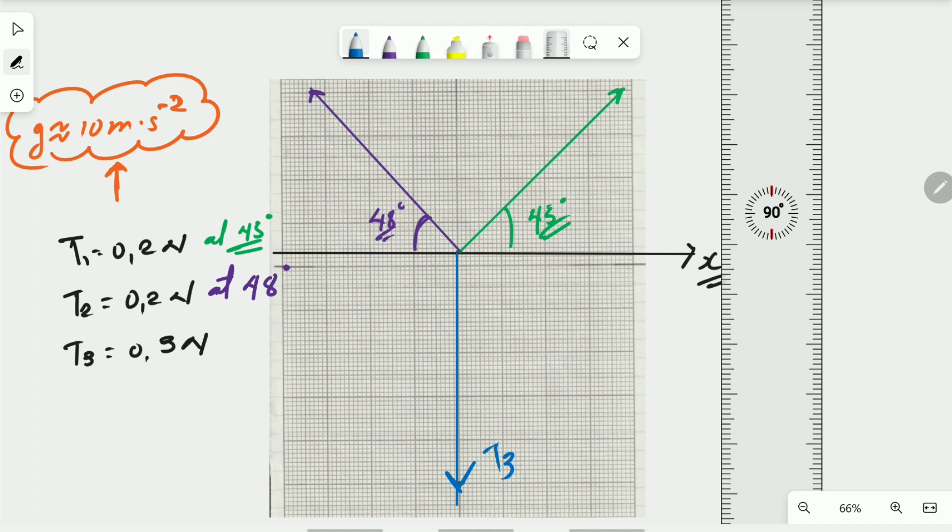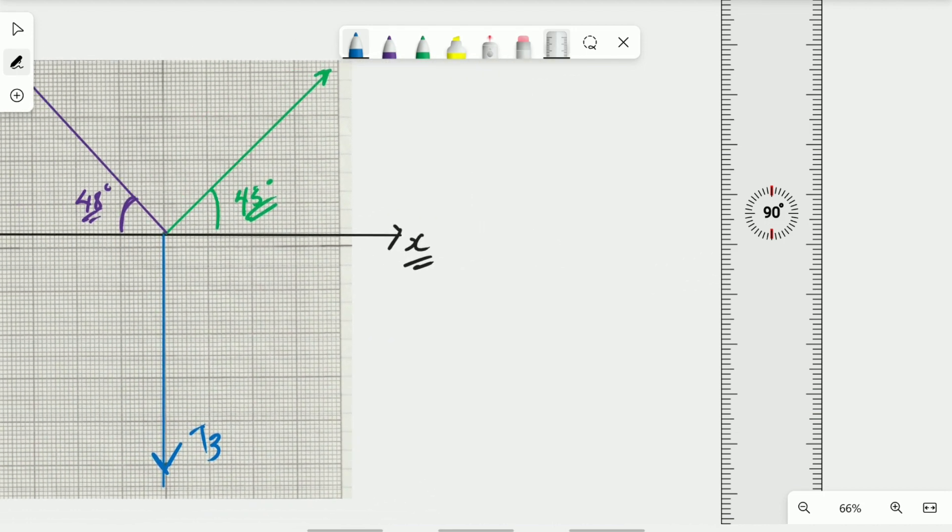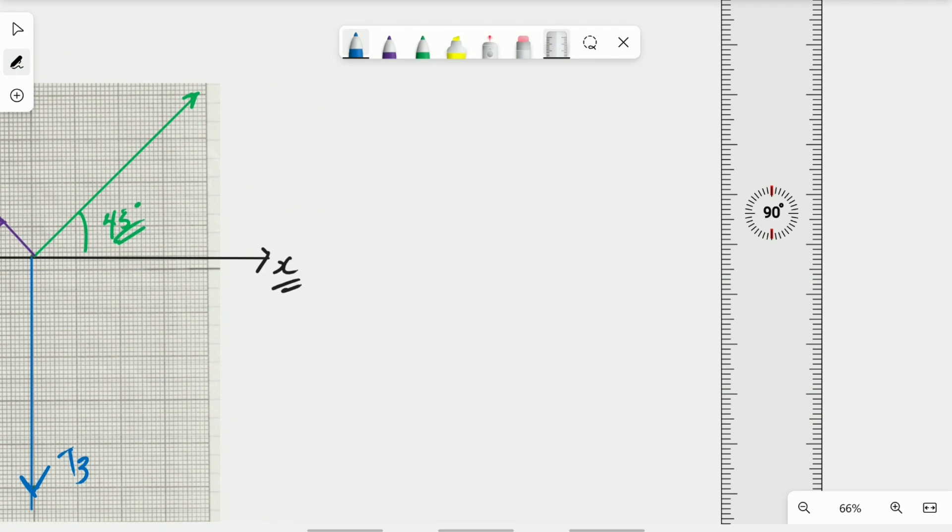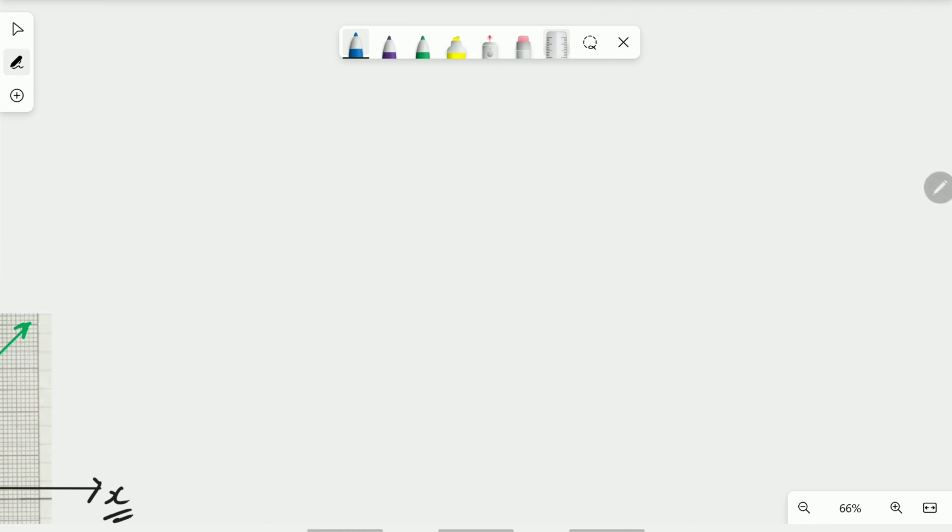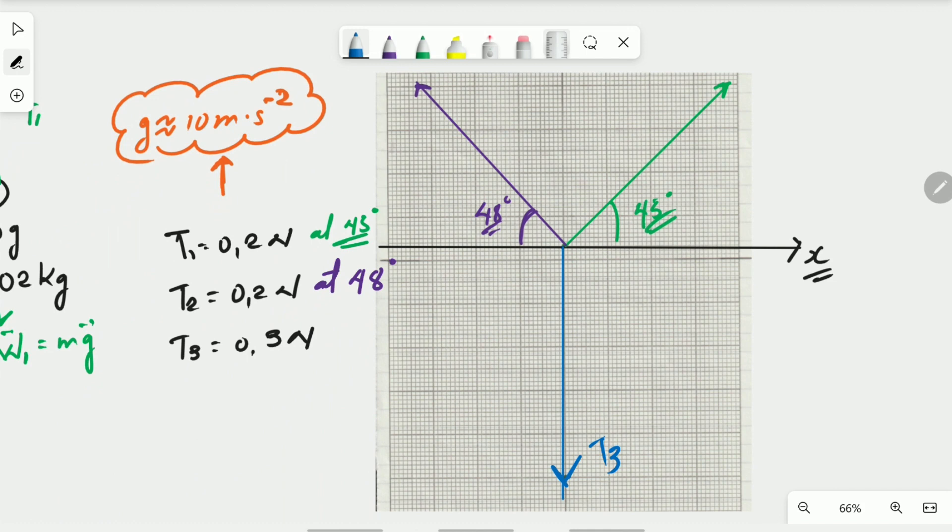So now we have the magnitude and we have the direction. We are going to add these vectors graphically, that is the main purpose of this work with all the data we have. To do this, the first thing we are going to do is to draw a Cartesian plane. But before that one you need a scale. According to the magnitude we have, you can see the best scale you can use is 0.1 newton. We are going to say that 0.1 newton is going to be equivalent to 1 cm.